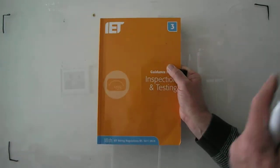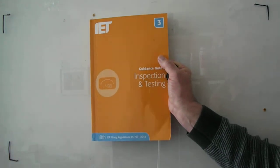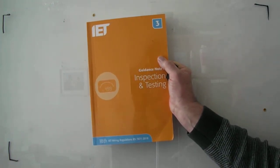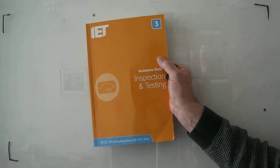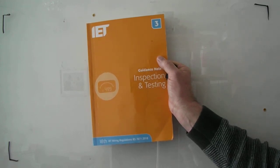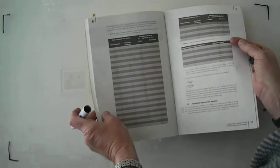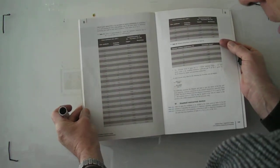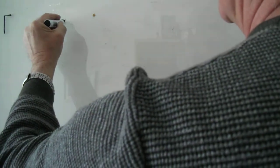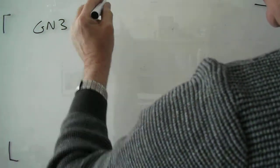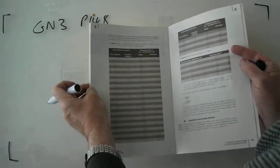Okay everyone, what we're going to have a look at now is a short video on finding the resistance of a piece of cable, a single core bonding cable for example. We're going to use guidance note 3 and we're going to look at table B1 on page 148. So it's guidance note 3, page 148, table B1.